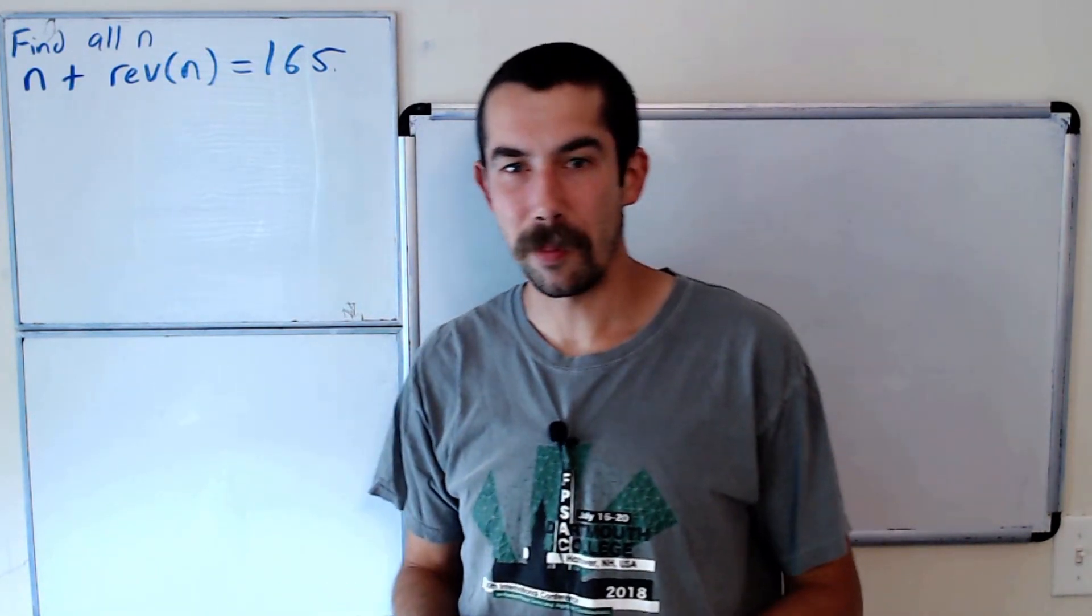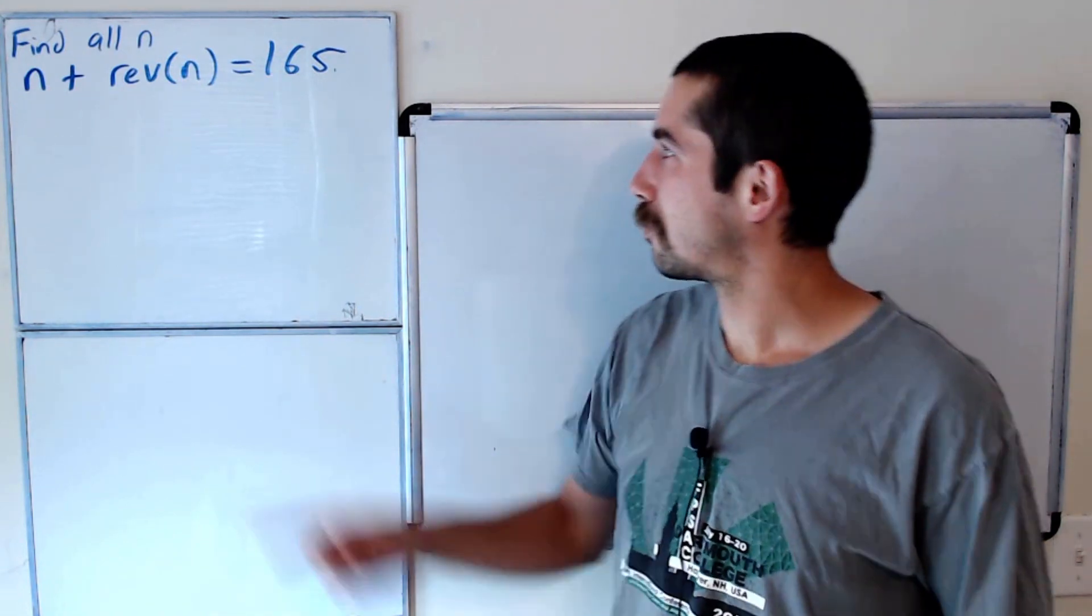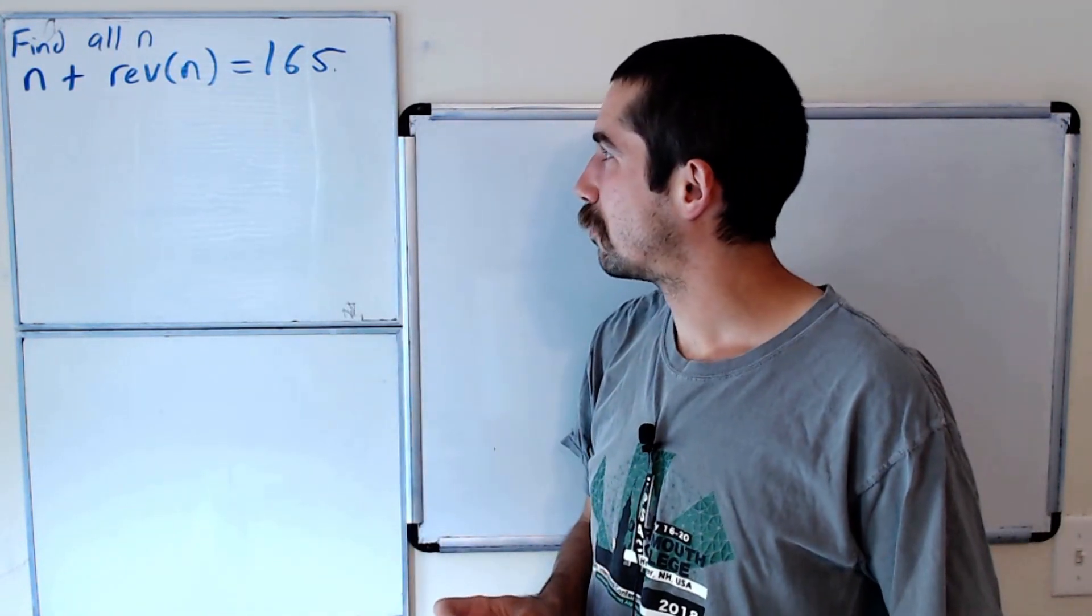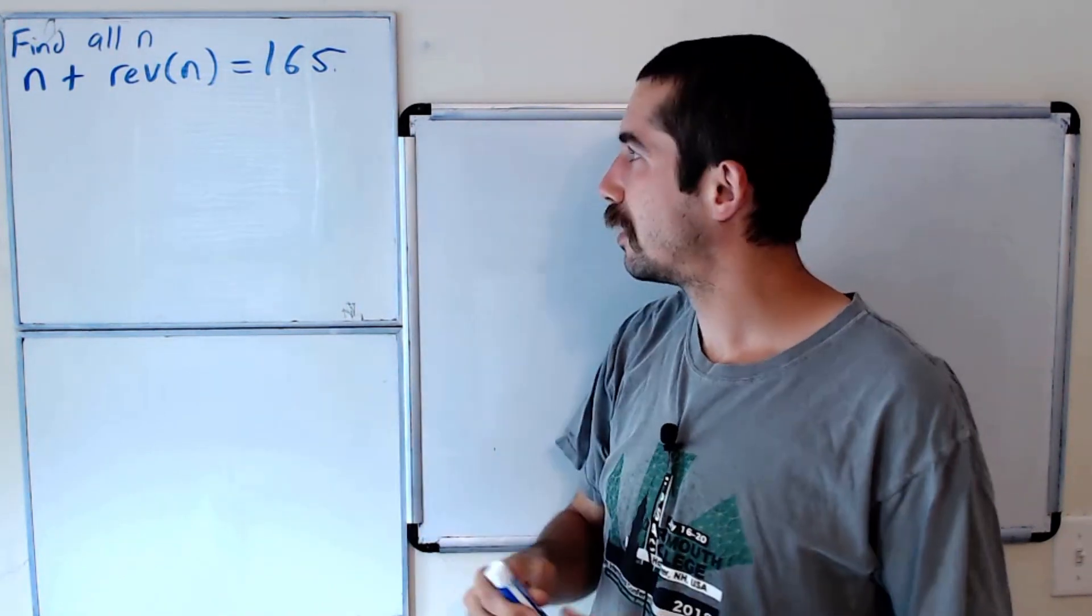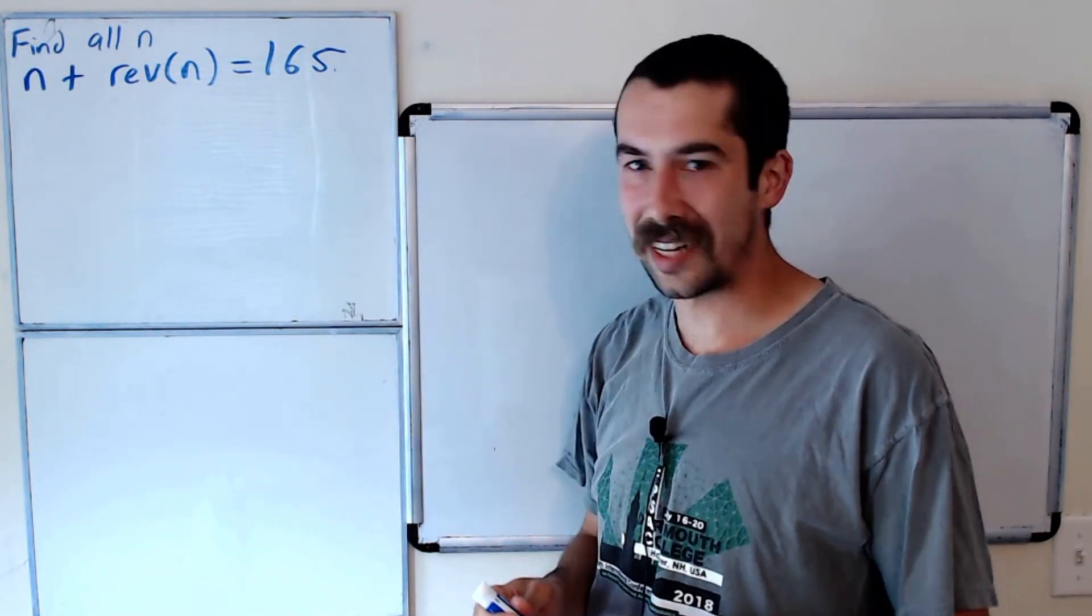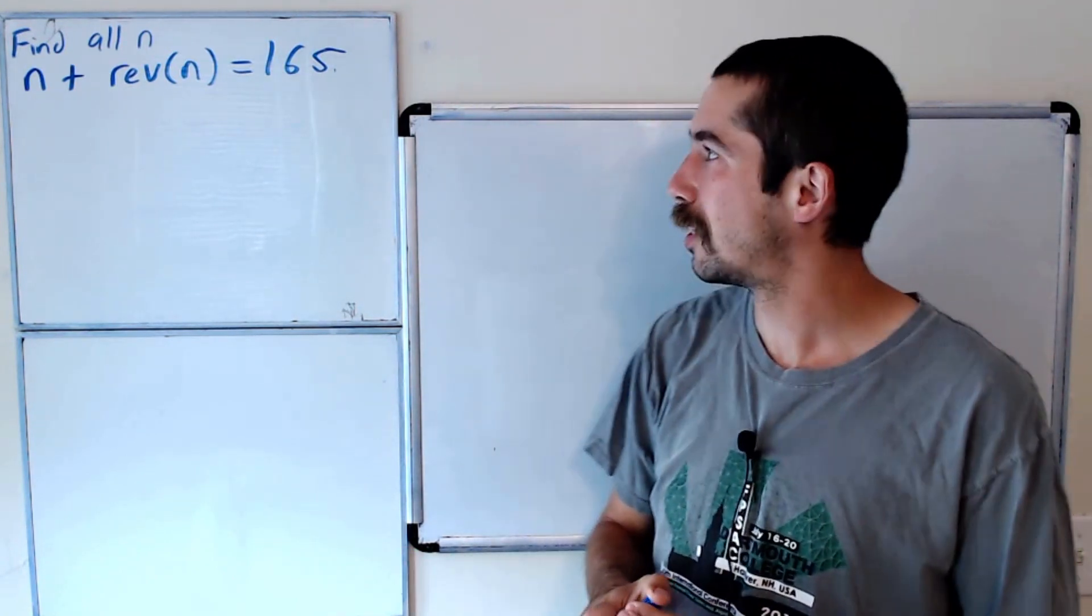Here's a nice problem that was asked by one of my subscribers. You may know him, he leaves a lot of comments. Find all n such that n plus the reverse of n in base 10 equals 165. This is an easy one, so try it on your own and let me know in the comments if you're able to solve it.